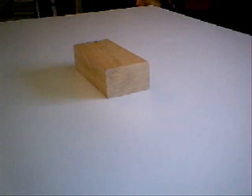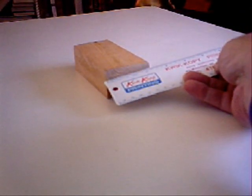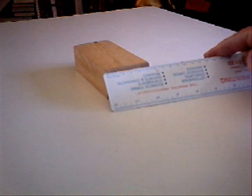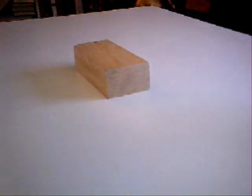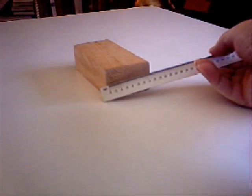Consider an object such as a block of wood. Certainly it has extension, it has dimensions, but does it have numbers? If I measure it, I will get a number, but the number I get depends on the fact that I'm measuring it with a ruler marked in inches. If I use a ruler marked in centimeters, I will get a different number. If I use a ruler that is marked in some other units, I will get yet a third number.